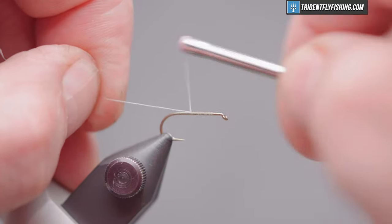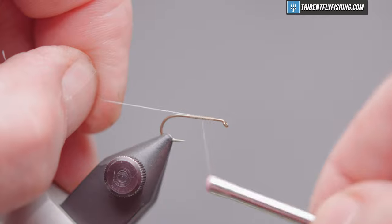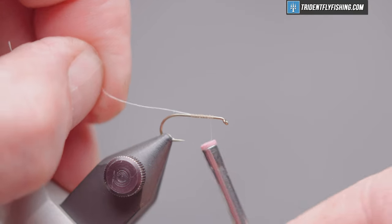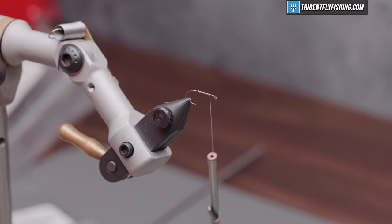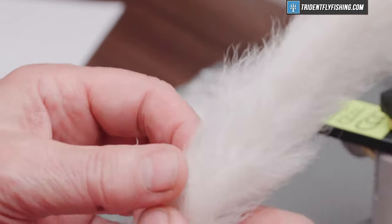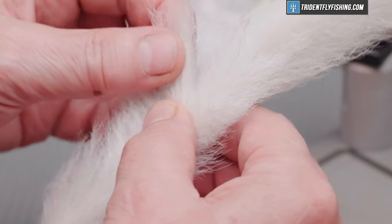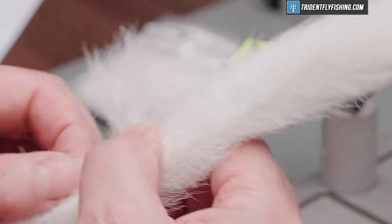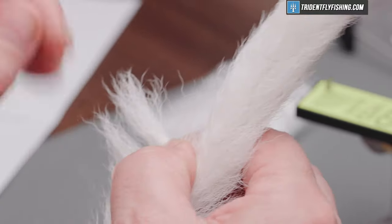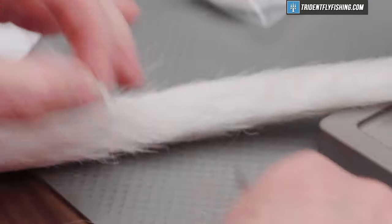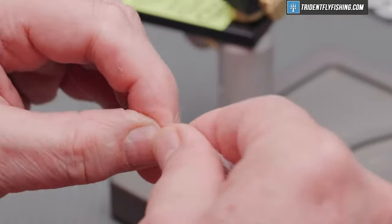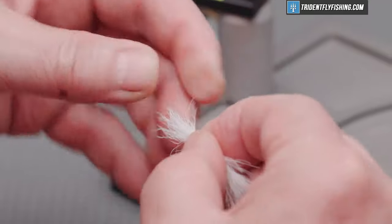Wrap back, form a small thread base for our wing. Come back up. And the first material for the wing is going to be some hairline calf tail hair. And we'll select some out here from the middle. Pull it out perpendicular to the tailbone to help align the tips. Cut some off. A lot of fuzzy under material in here. We're going to get rid of that.